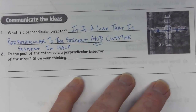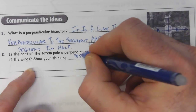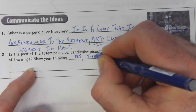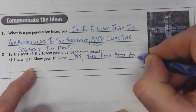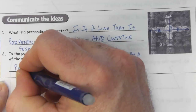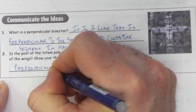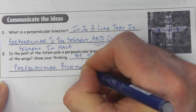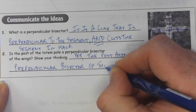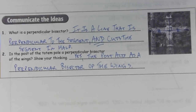Yes, the post acts as a perpendicular bisector of the wings. And that is the 'communicate the ideas' section.